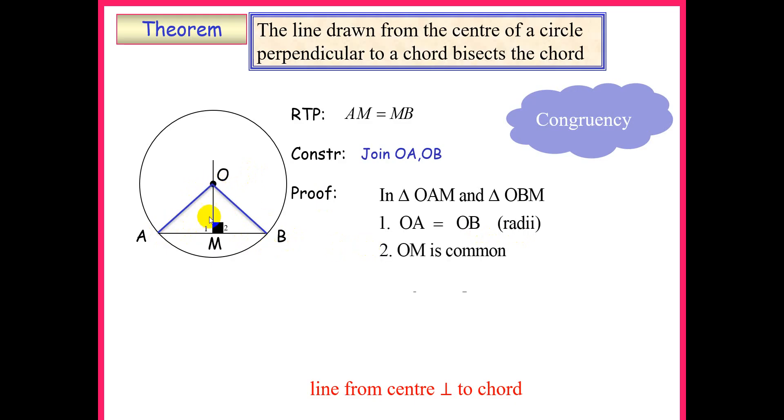Number two, OM is common to both triangles. Number three, we have M1 which is equal to M2 which is equal to 90. Remember they told us that OM is perpendicular to AB. So M1 and M2 are 90 degrees. This is a straight angle.